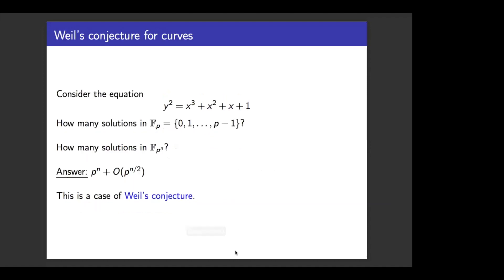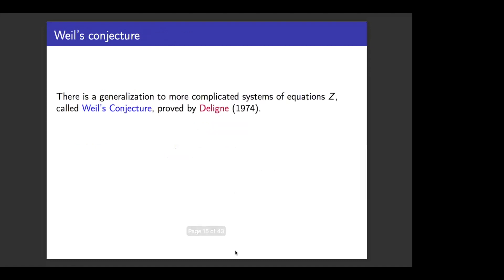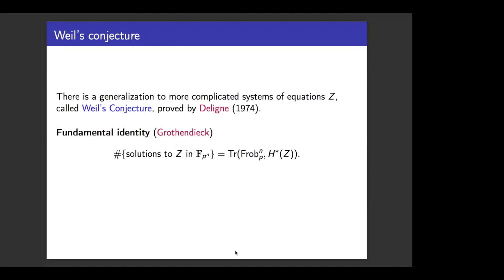Now I'd like to return to the story we started with. There's a statement for more complicated systems of equations called the Weil conjecture, and it was proved by Deligne some years ago. I'm not going to say much about the proof, but I want to highlight that a key step is reinterpreting the count of solutions to equations as the trace of some power of the Frobenius endomorphism on a vector space associated with the variety. This identity is what allows one to bring extra structure into the question.